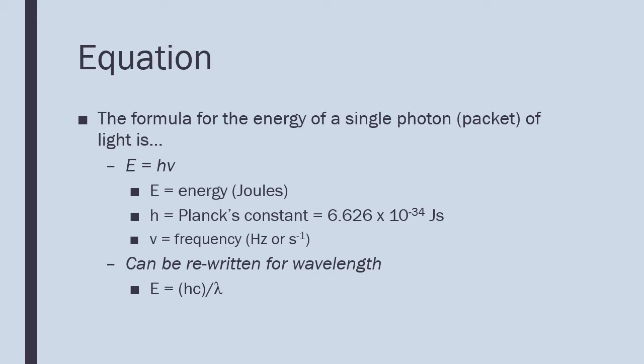This equation can also be rewritten by substituting for nu, so that now wavelength is part of the equation. When this equation is rewritten, it is E equals hc divided by lambda, where h is still Planck's constant, E is still energy, c is the speed of light, and lambda is wavelength.